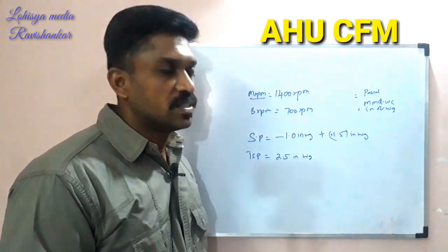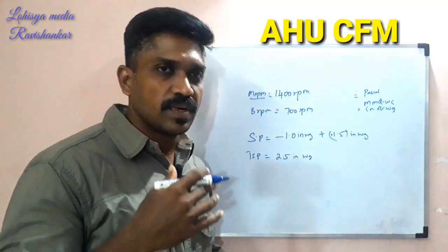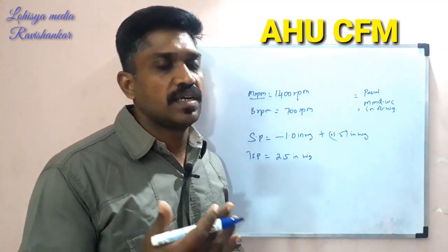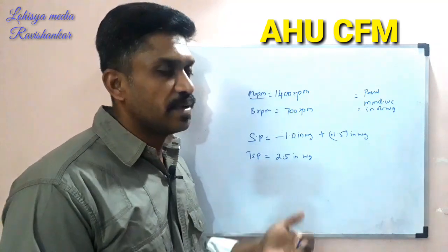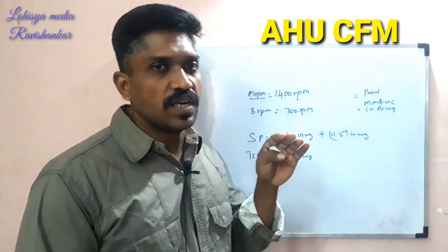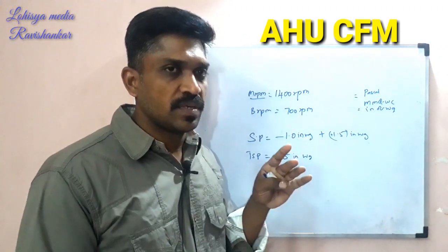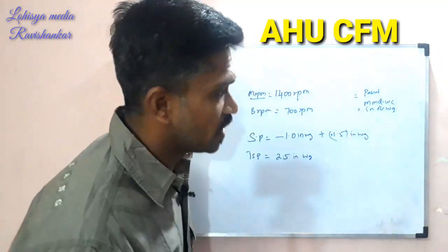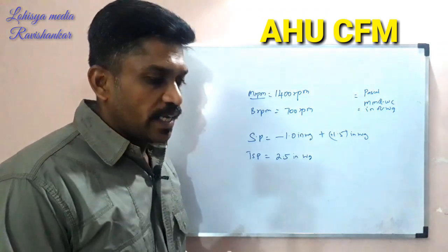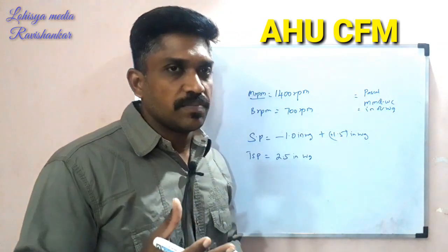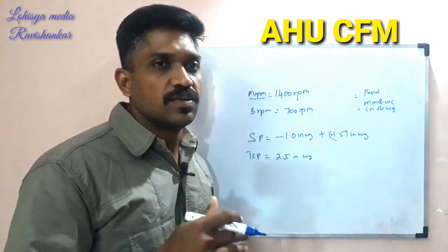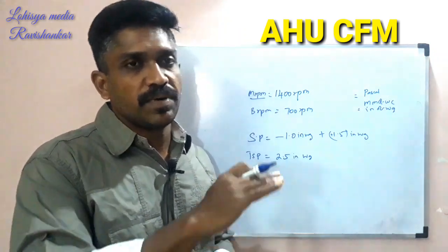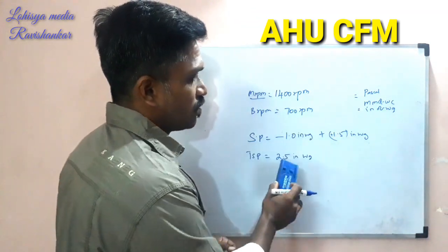Total static pressure is equal to 2.5 WG. Now, how do we find CFM? We have a standard fan CFM table chart. Normally there is also a psychrometric chart. In the fan table, the temperature corresponds to 1.5 WG, and this axis corresponds to around 2.5 WG.